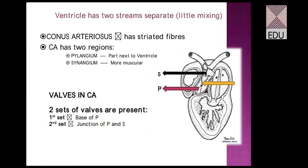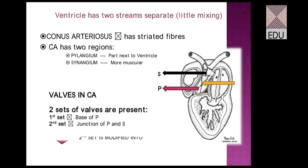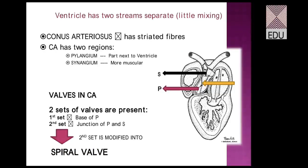The second set of valves, present at the junction of the pylangium and synangium, is modified into the spiral valve. This is the most important valve in the frog. This second set is modified into the spiral valve, which is responsible for keeping the two streams separate when blood leaves the heart.